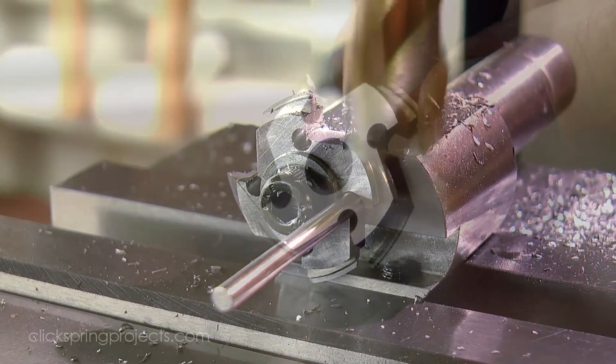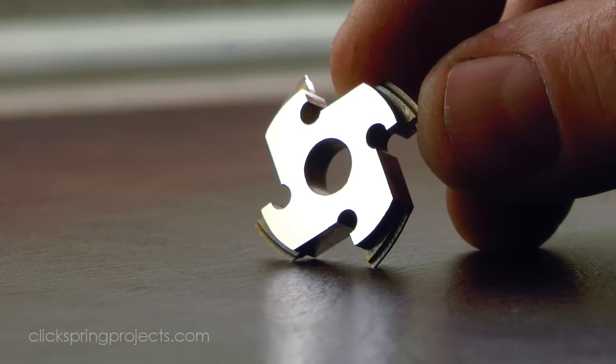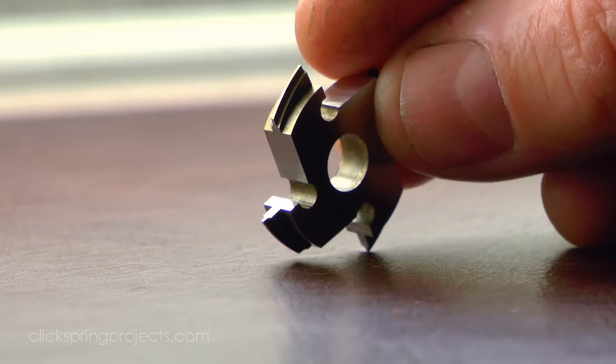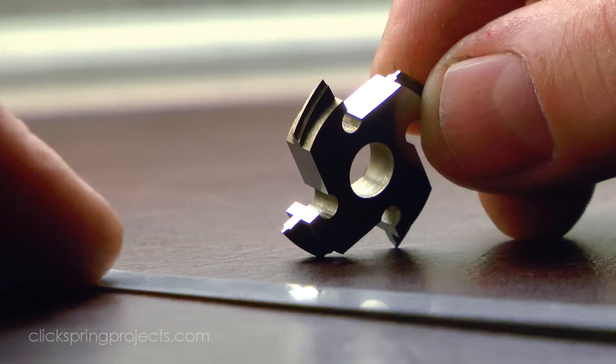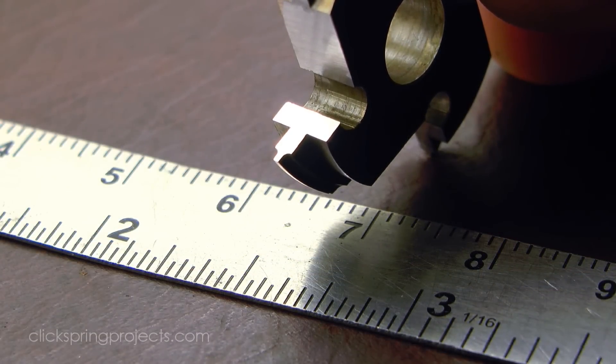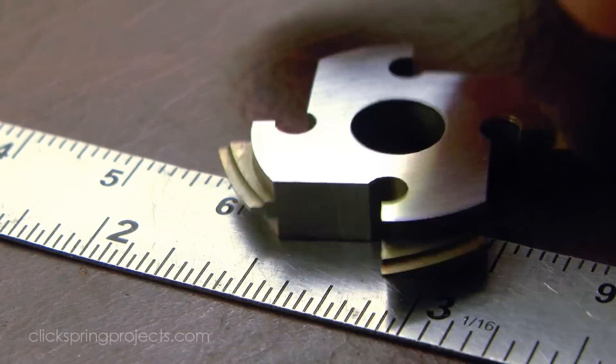The process results in quite a delicate cutter that nevertheless can be used in exactly the same way as we've become accustomed, and once hardened and tempered using the standard home shop techniques, the wheel cutting proceeds as you'd expect.